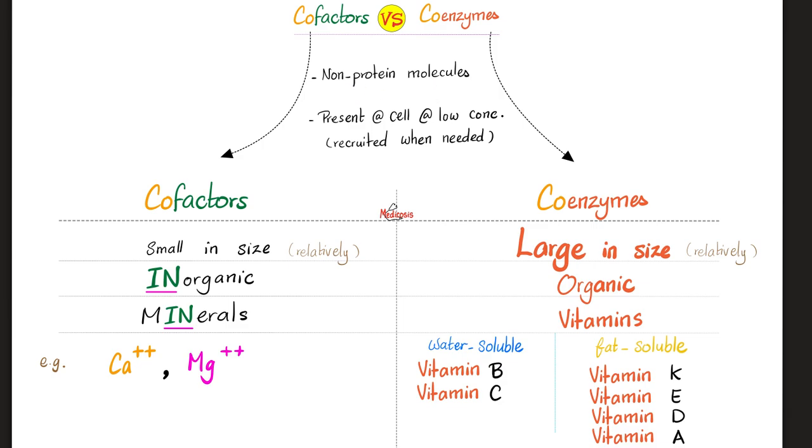Both are not proteins. Both are present in the cell at low concentrations. If you need them, we can recruit more, raising the concentration of cofactors or coenzymes inside the cell. Just like Netflix on demand. Now, on to the differences.